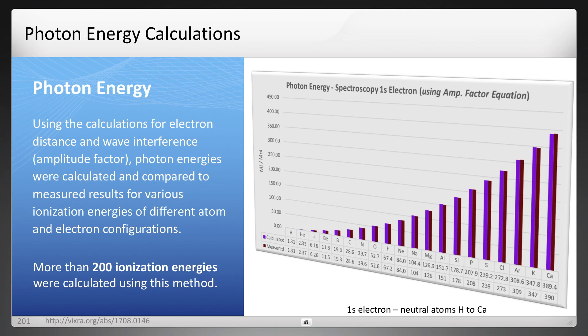And one of the graphs is here, which is neutral atoms from hydrogen to calcium, at least for the 1s electron, and much more is available in that paper.